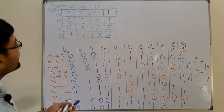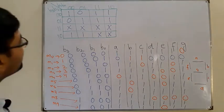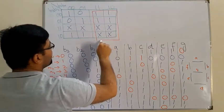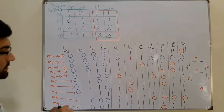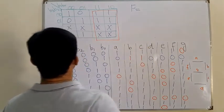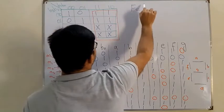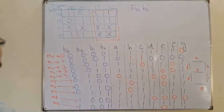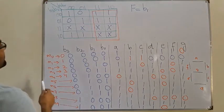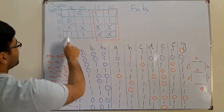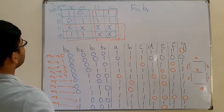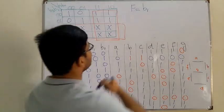We solve using minterms. The first group is a group of 8 ones — in this group B1 is not changing, so f equals B1. The second group is also a group of 8 ones where B3 is not changing, giving us plus B3.